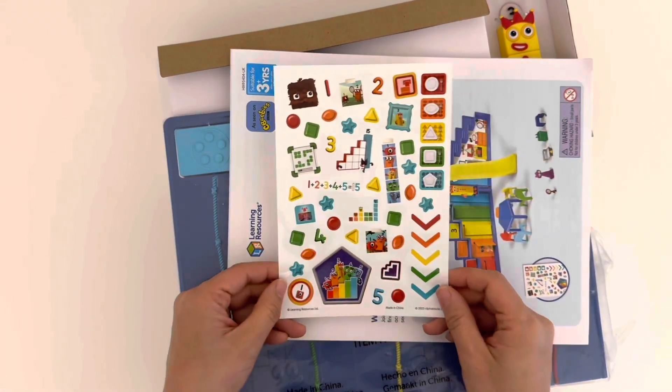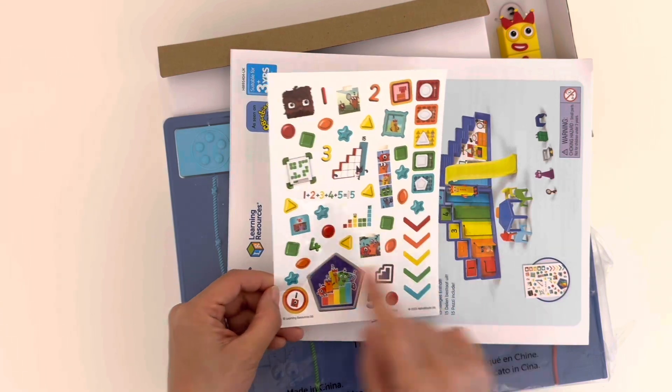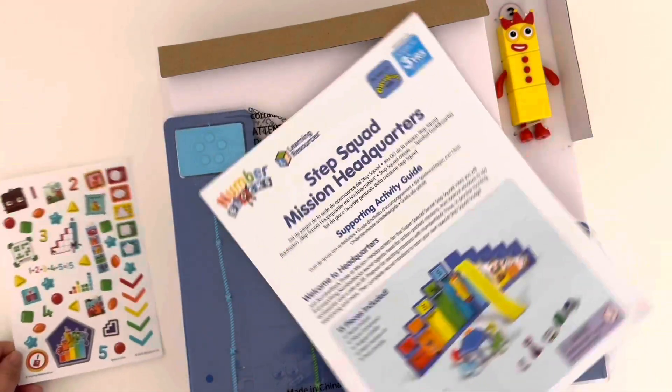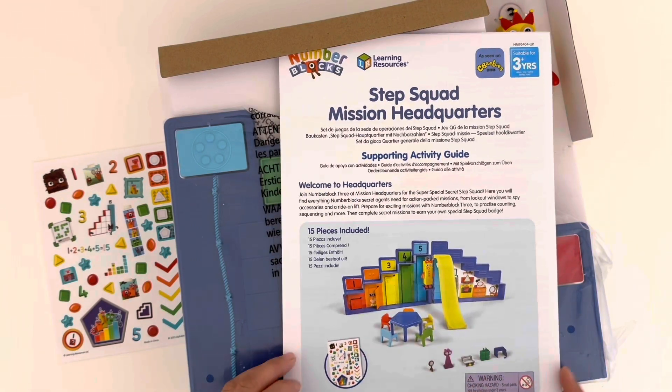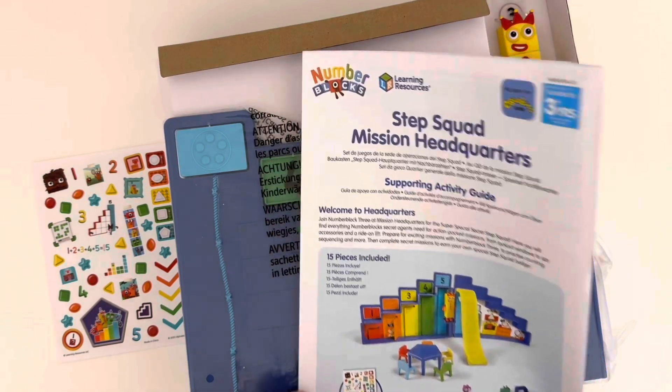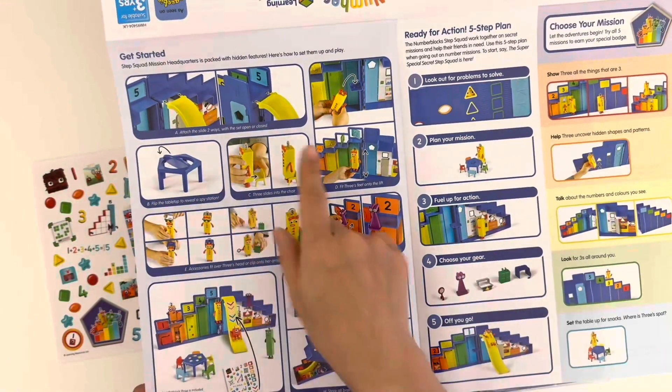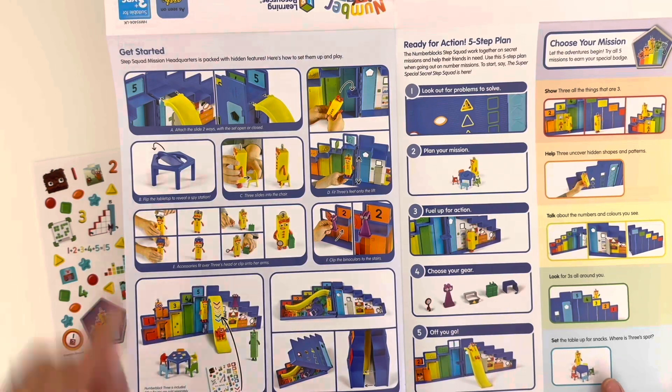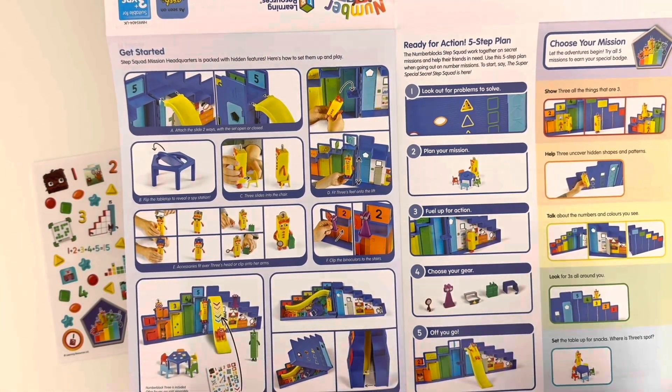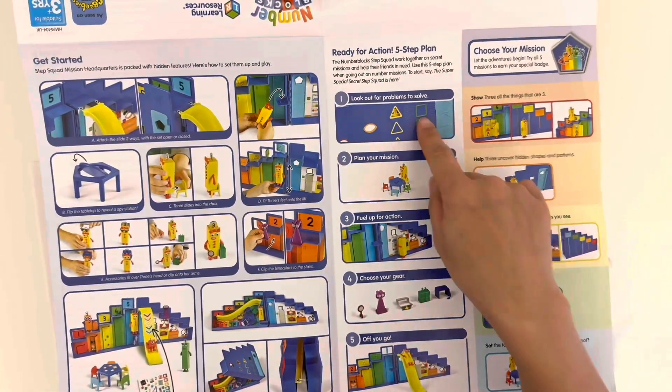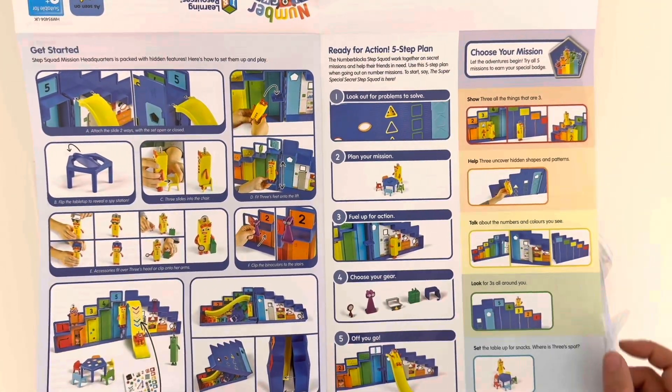We have lots of stickers here so we can use these to decorate the playset. And here's the activity guide, which shows us the pieces included in this box. And if we open it up, we have instructions on how to get started, such as how to fit the slide and the ride-on lift. It also includes the five-step plans, so we can become an official agent and always be ready for action.